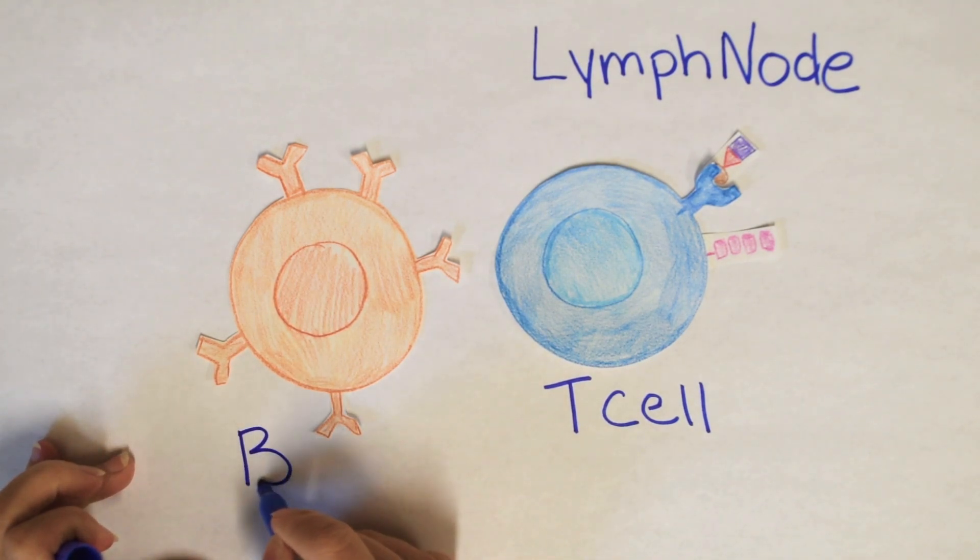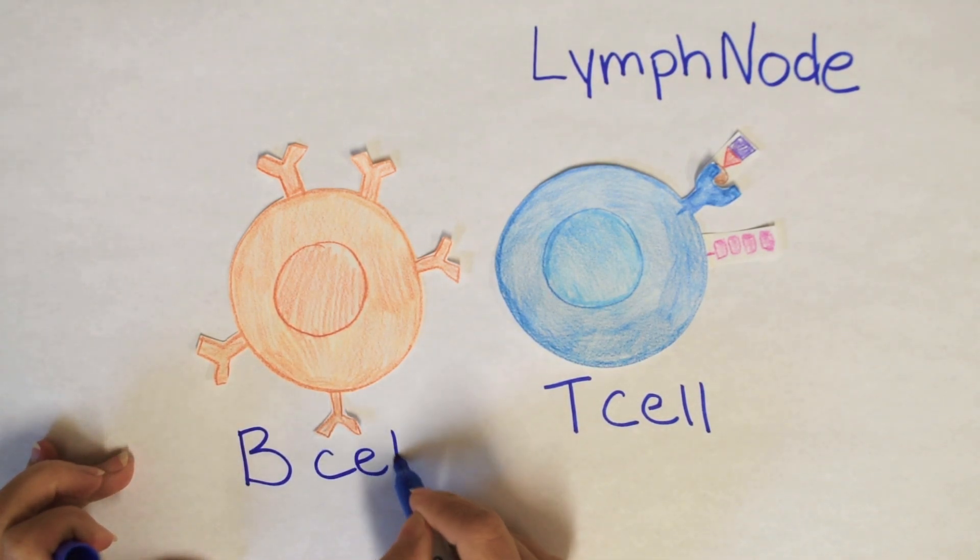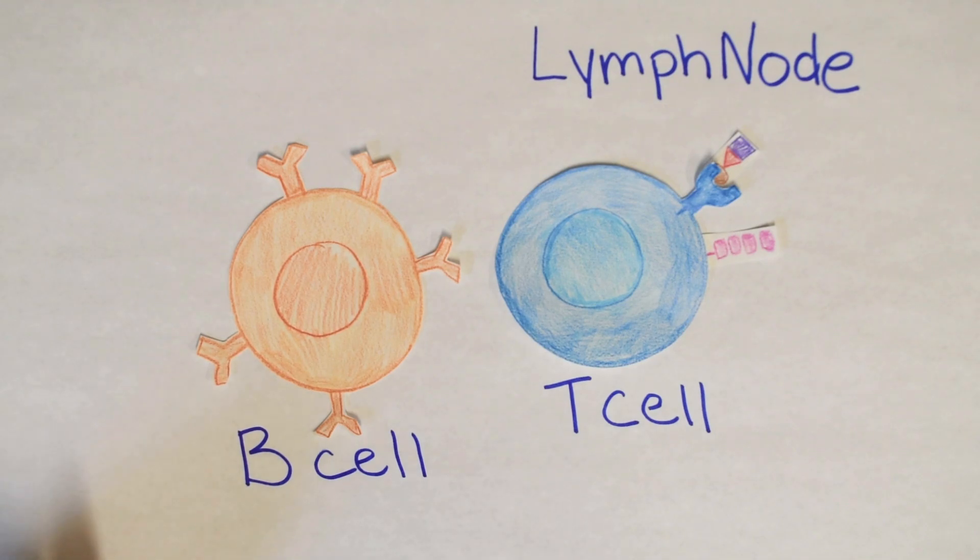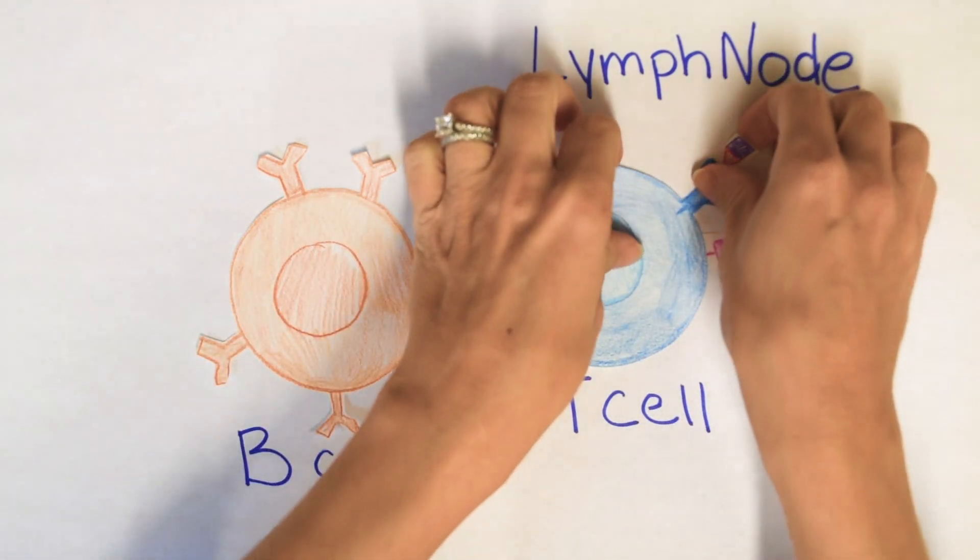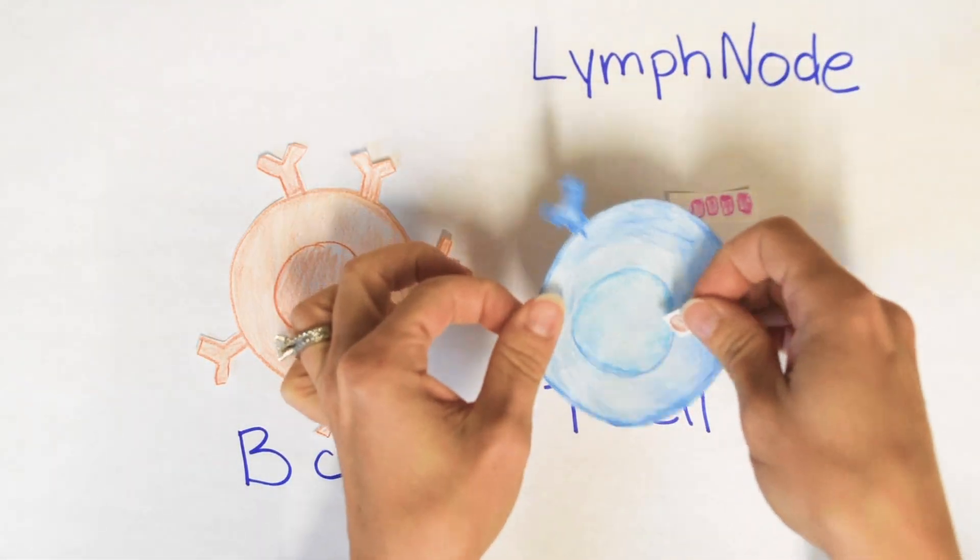The best case scenario is if they also find and activate a B cell, because B cells are the only cells in your body that make antibodies, those orange Y-shaped things I've drawn on the outside of the B cell.